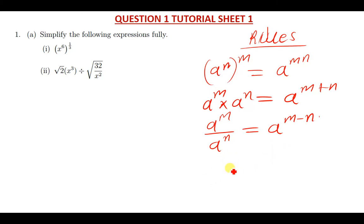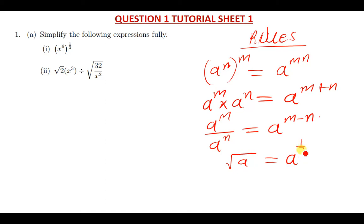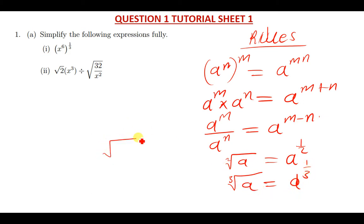You can also be given something like the square root of a. The square root of a is simply the same as a to the power one over two. The two comes from 'square.' Similarly, the cube root of a is just a to the power one over three, and the fifth root of a is a to the power one over five.